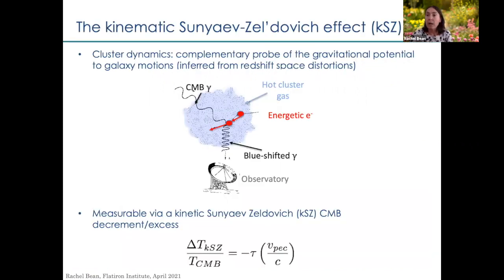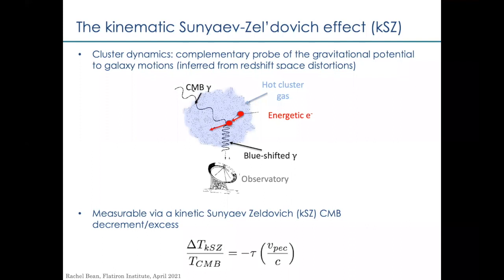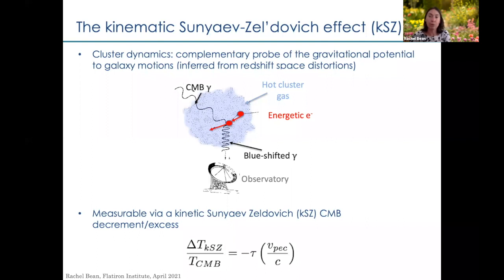This is focused on an observable called the kinematic Sunyaev-Zel'dovich effect. For those not in this field, it is essentially a measurement of the Doppler shift of galaxy clusters seen through an imprint on the CMB relative to its rest frame. If you have a CMB photon, it interacts and scatters with energetic electrons within the intra-cluster medium. If that cluster has a peculiar velocity along the line of sight towards us relative to the CMB rest frame, it induces a blue-shifting or Doppler shift, which is encoded as a temperature decrement or excess in the CMB.